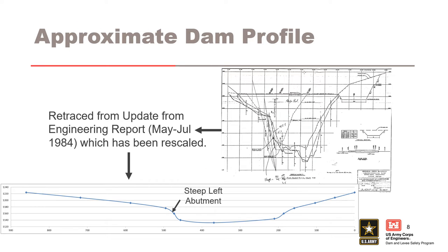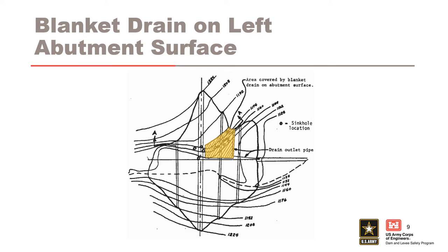The top right figure shows the dam profile. This was re-plotted to be on a 1 to 1 scale and is shown in the bottom figure. The left abutment was steep with a slope approximately equal to 1 to 1. This figure shows the location of a gravel blanket drain placed over the left downstream abutment rock. The drain started at about 20 feet downstream of the dam centerline and extended 210 feet to a 12-inch drain pipe.